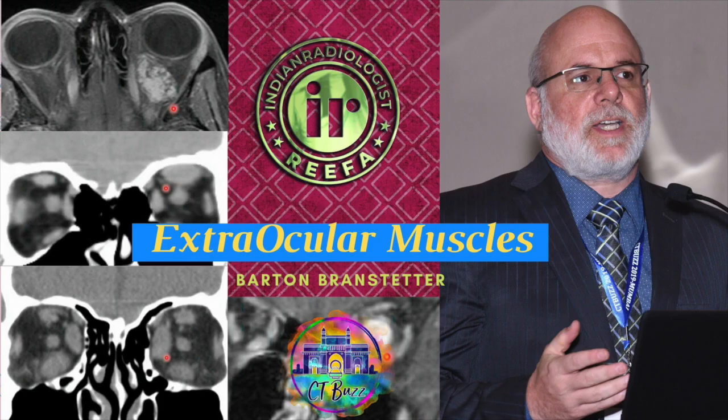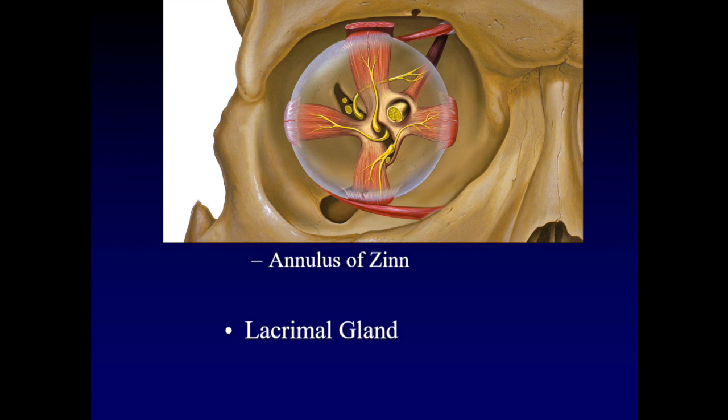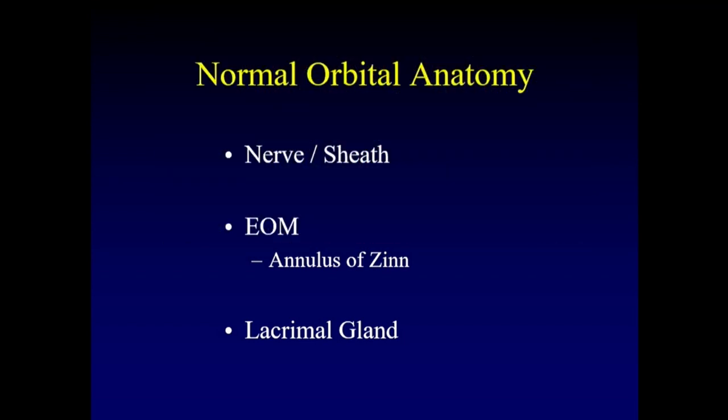For normal orbital anatomy, the things we want to look at are the optic nerve and its surrounding dural sheath. We want to look at the extraocular muscles that come together posteriorly at a fibrous ring around the optic nerve called the annulus of Zinn. And of course the lacrimal gland in the superior lateral aspect of the orbit is another important reference point for us.